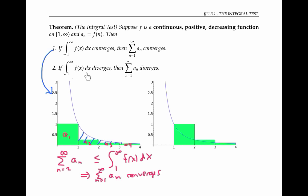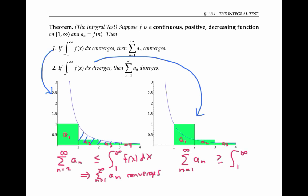If instead our integral diverges, then we use the other picture and use left endpoints for our rectangles. The areas of the rectangles are still given by a sub one, a sub two, and so on. But this time, the combined area of the green rectangles is now greater than or equal to the integral of our function. Since this integral diverges, the larger area must diverge as well. That's the idea behind the integral test.